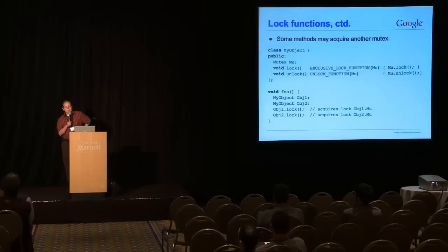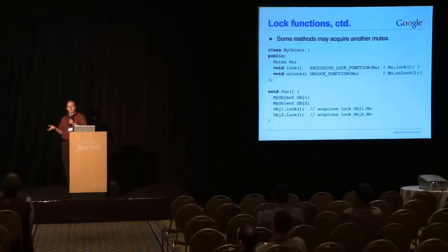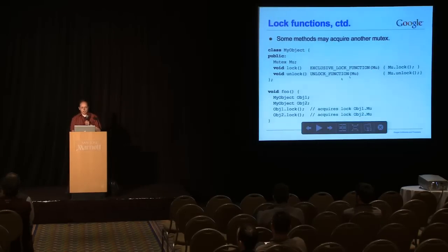You can also do something on classes where the class itself is not lockable, but it is guarded by another mutex somewhere. So, here I've put exclusive lock function and unlock function on these two methods, but I specify in the argument to the attribute, I specify the mutex that it's actually locking. And so, there's a little bit of naming magic that goes on here. If we have my object, two objects, obj1 and obj2, if you call obj1.lock, it'll look at this attribute, see that it refers to mu, and then know that it acquires obj1.mu.